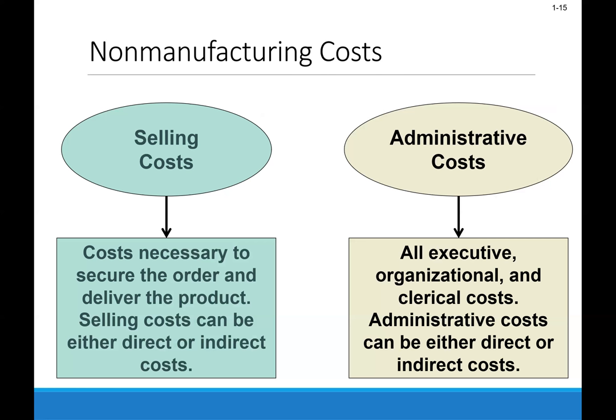In this class we're going to spend a lot of time doing problems because that's how you learn. PC Works assembles custom computers from components supplied by various manufacturers. The company is very small; its assembly shop and retail sales store are housed in a single facility in a Redmond, Washington industrial park. For each of the costs listed, we need to decide if it would most likely be classified as direct materials, direct labor, manufacturing overhead, selling, or administrative.